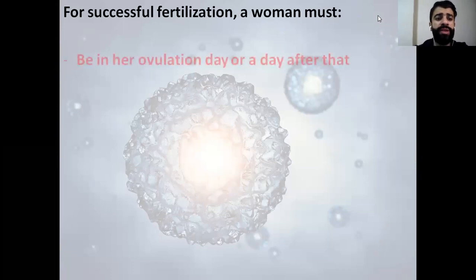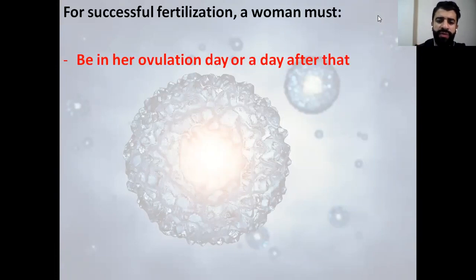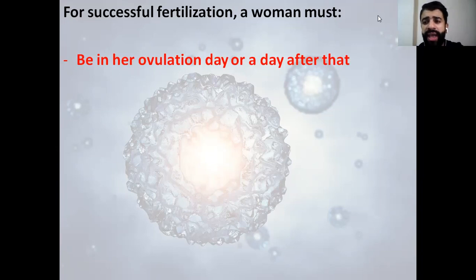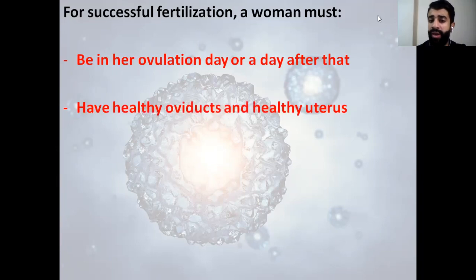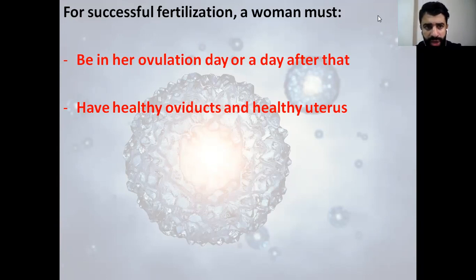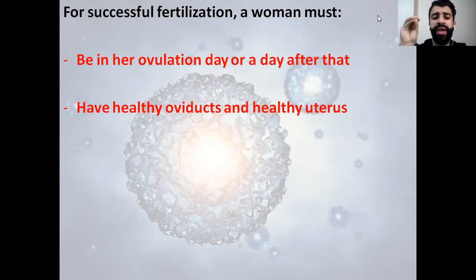First, a woman should be in her ovulation day. Her ovulation day means day 14 of the menstrual cycle, or a day after that — either day 14 or day 15. She should also have a healthy oviduct and a healthy uterus. The uterus, as we said, is the site of implantation of the embryo. So for successful fertilization, the woman should have a healthy oviduct and healthy uterus.